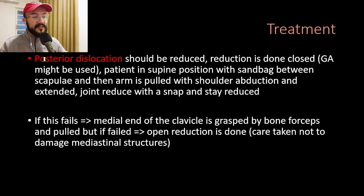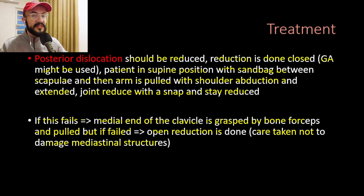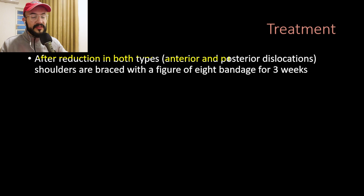Posterior dislocations should be reduced because of the potential harm to the structures behind the clavicle. Reduction is done closed, possibly under general anesthesia, with the patient in a supine position and a sandbag between their scapulae. The arm is pulled with the shoulder abducted and extended, and the joint reduces with a snap and stays reduced. If this fails, the medial end of the clavicle is grasped with bone forceps and pulled. If that also fails, open reduction is performed, taking care not to damage the mediastinal structures. After reduction of both anterior and posterior dislocations, the shoulders are braced with a figure-of-eight bandage for three weeks.